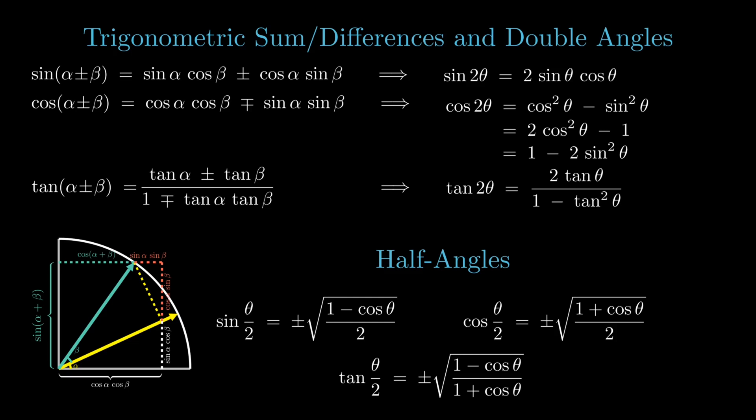In physics, half angles are frequently used to simplify calculations related to wave mechanics and oscillations and even further on in your undergrad courses like signal processing, AC circuit analysis and so on.